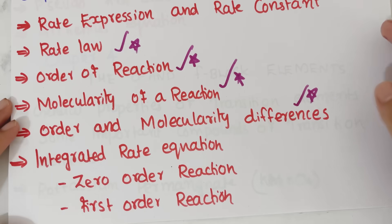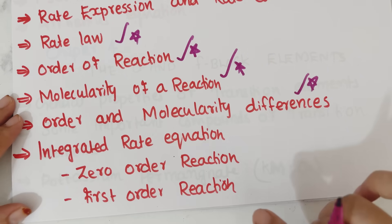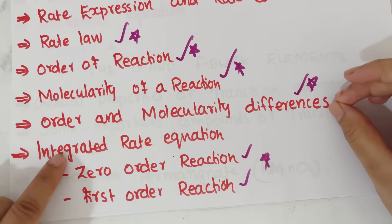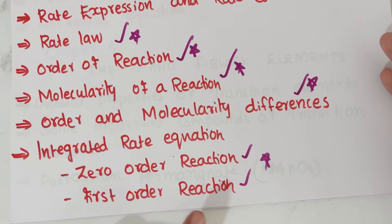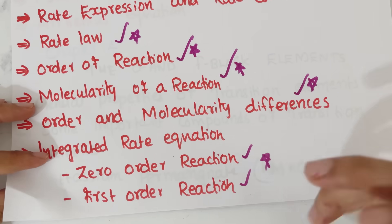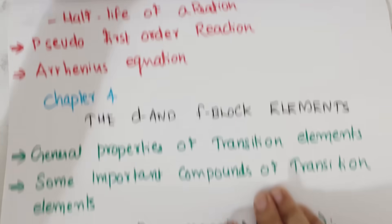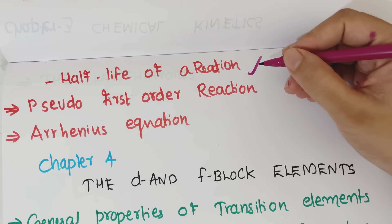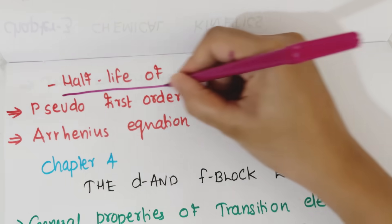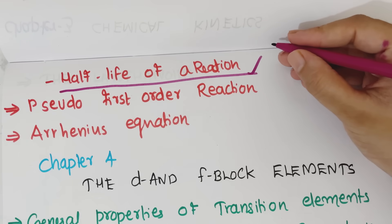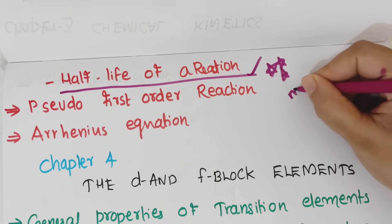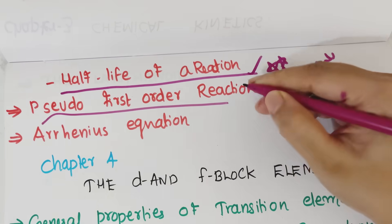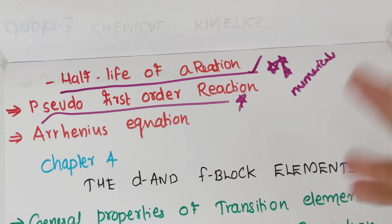This is the first order reaction. Let's see the first order reaction and half-life. Half-life of zero order and half-life of first order — let's see the derivation and the numerical questions. The pseudo-first order reaction is very important. What is pseudo-first order reaction? Let's see the example.